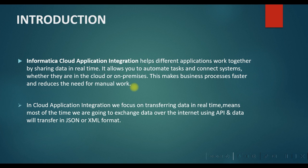In data integration we build flows and automate them using a schedule, but in application integration we focus on transferring data in real time. Most of the time we exchange data over the internet using APIs, and the data transfer is in XML or JSON format. Data integration is usually used for transferring large amounts of data, but application integration is not — the amount of data transferred at once is usually much smaller. Both have different components and assets.